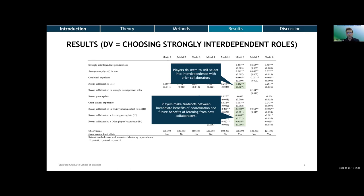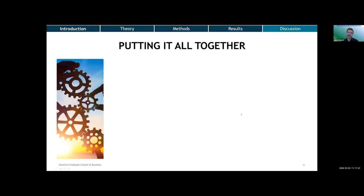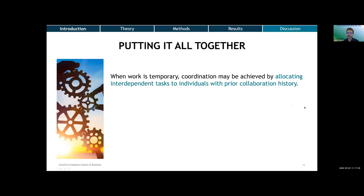The idea is that when I choose to work interdependently with someone I know from before, I get coordination benefits because I already have routines with them. But working interdependently with someone I've never collaborated with gives me more visibility over the way they work and might enable me to learn something new about the task environment. In the data, in situations where those learning benefits are more likely to be effective, I see players being less likely to choose interdependent roles when they have collaborated in the past. So this was a relatively short presentation with some pretty exciting insights.